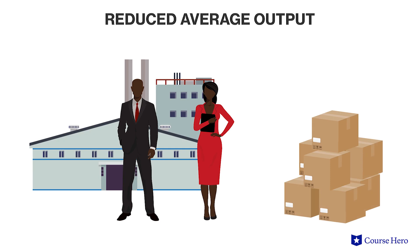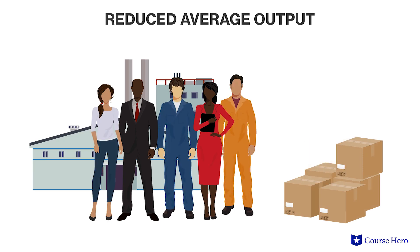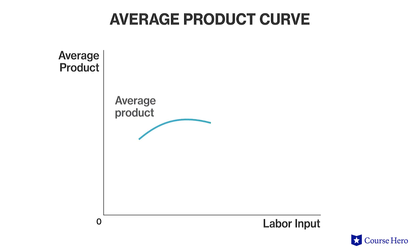At some point, there will be less scope for specialization and adding extra workers will produce a smaller increase in output. Eventually, the difficulty of managing large groups of people will lead to a situation where additional workers will reduce average output even faster than the total output is reduced, because the average output is divided by a larger number of workers. When this happens, the curve will slope downward.